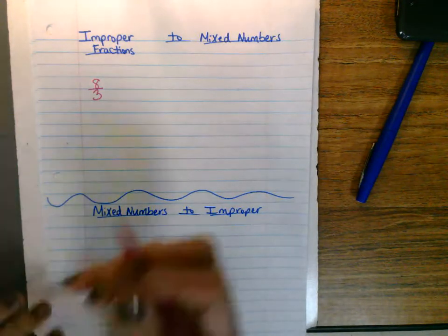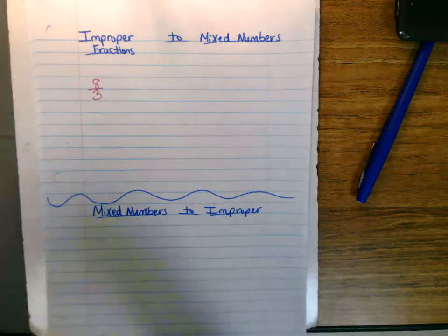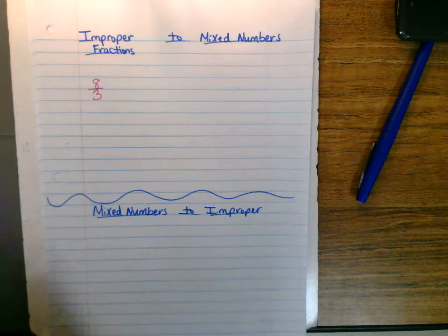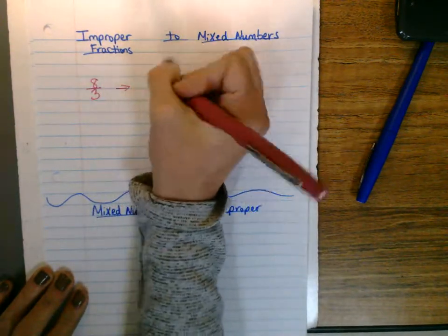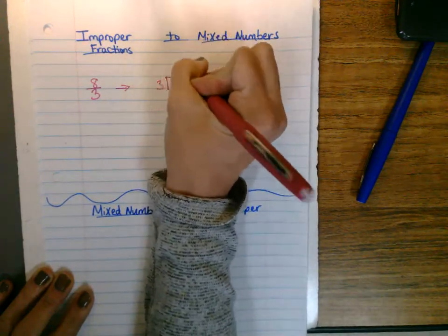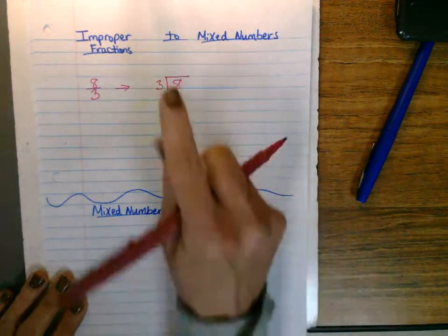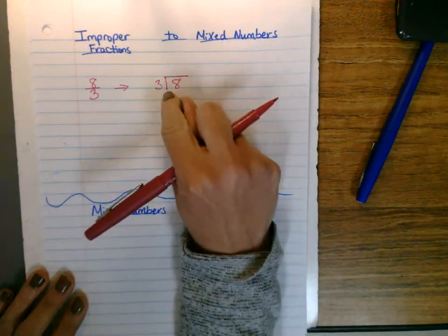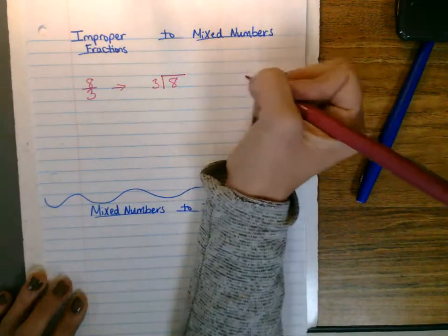So let me just show you what we do, and this might be the same method or strategy you used when you were working on fractions in school. We just take the denominator, and we change it into the divisor, and then we put the eight as the dividend. And we just say, how many times can three go into eight, or what times three is closest to eight?